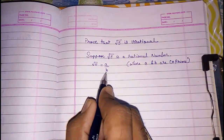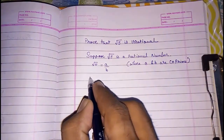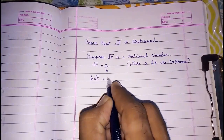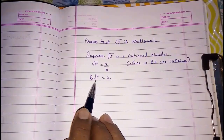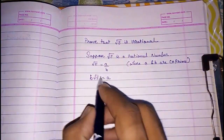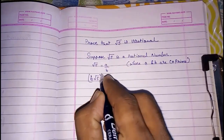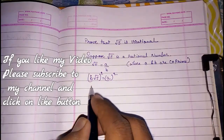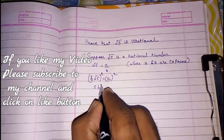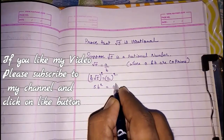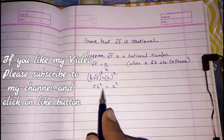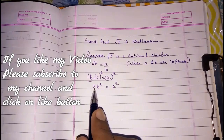Now we are going to solve it. First, b is in the denominator, so we will take it to the other side to get a simple equation. Now we have to remove the root, so squaring both sides — you have to write this statement. Under root 5 squared will give you 5, so 5b squared is equal to a squared.